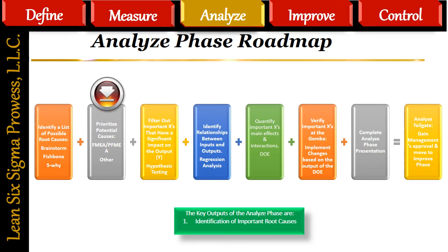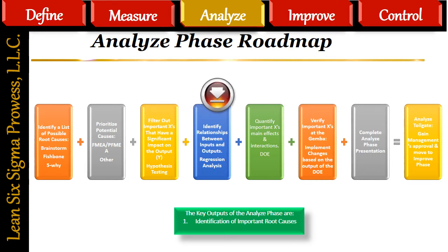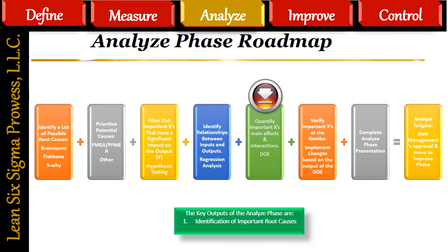Step 2: Prioritize potential causes. If there are a lot of possible root causes and you are uncertain about the impact they may have on the process output, Y, use Process Failure Mode Effect Analysis (PFMEA), or Failure Mode Effect Analysis (FMEA) for those that are equipment-related, to prioritize the list of possible root causes. Step 3: Filter out important Xs (inputs) that have a direct and significant impact on the output, Y — use hypothesis testing to isolate important factors. Step 4: Identify relationships between inputs and outputs — use regression analysis to look for relationships between the inputs, Xs, and the output, Y. Step 5: Quantify statistical significance of important Xs — identify the synergy of important inputs, Xs, on the output, Y, by implementing Design of Experiments (DOE).